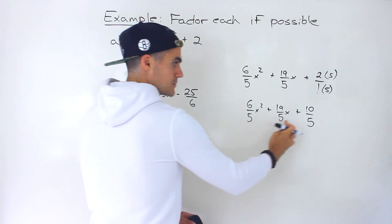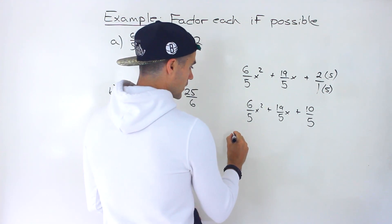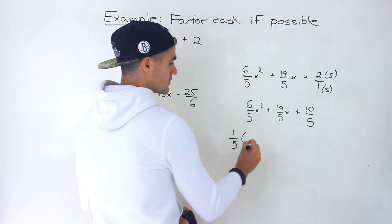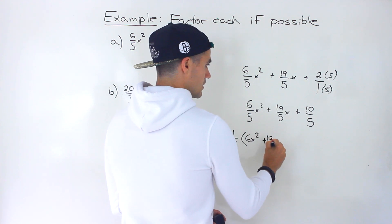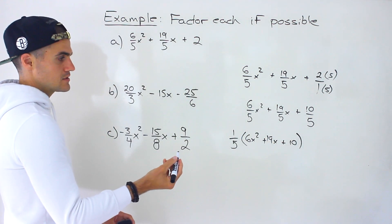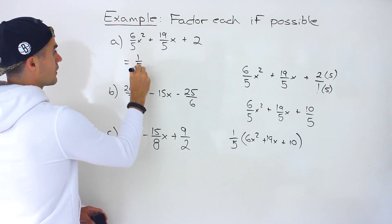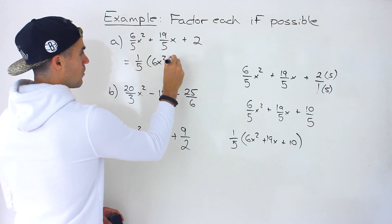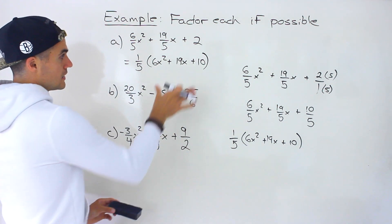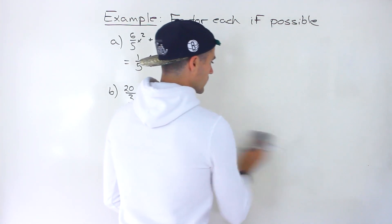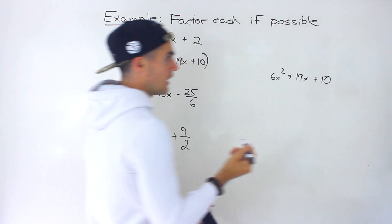Now, because you have the same denominator in all of them, you can bring that denominator out — factor it out. What I recommend is factoring out 1 over that denominator. When we do that, we're just left with those coefficients in the numerator: 6x² plus 19x plus 10. That's always the first step I take. Now let's work with this remaining bracket — notice it doesn't have any fractions left.